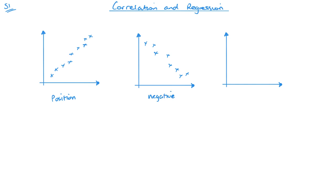Depending on how close the points are to a straight line determines how strong a correlation it is. If the points are more spread out, it might be a weak positive correlation; if they're tighter, it's a strong positive correlation. Where things are all over the place, there would be no correlation.